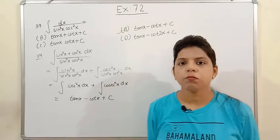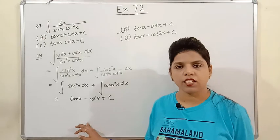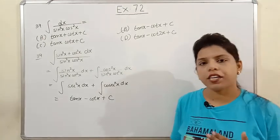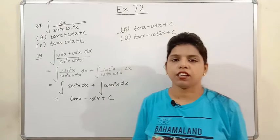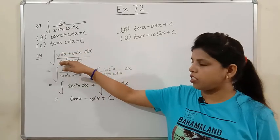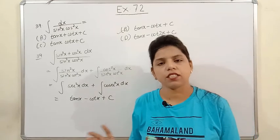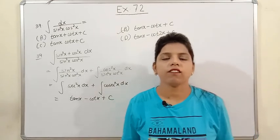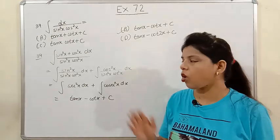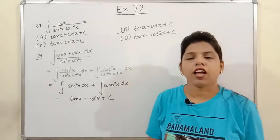I hope you have understood all the questions of Exercise 7.2. The basic concept is to identify the function and its derivative. If the derivative appears in numerator and the function in denominator, the answer is directly log|f(x)| + c. I hope you liked the video and understood the whole concept. Thank you so much for watching Alicia Mass Classes.